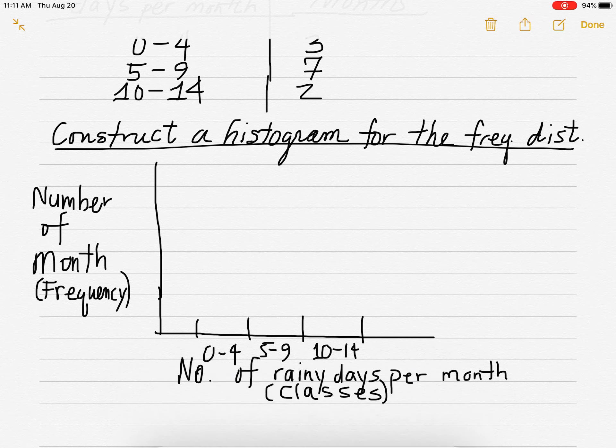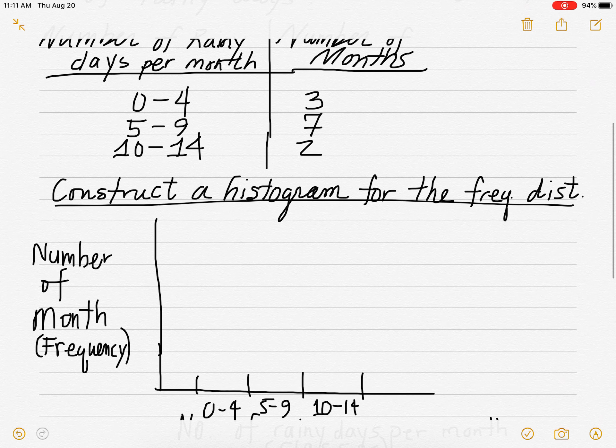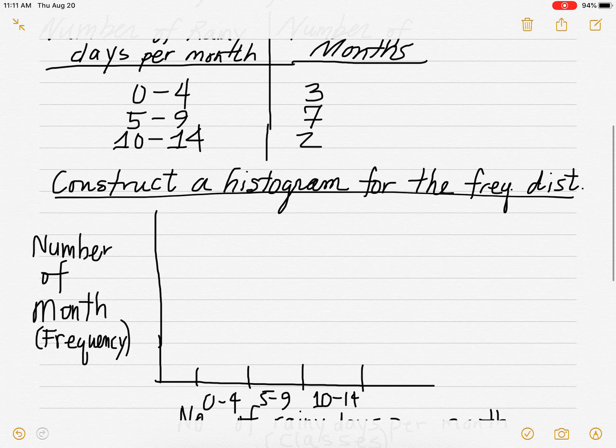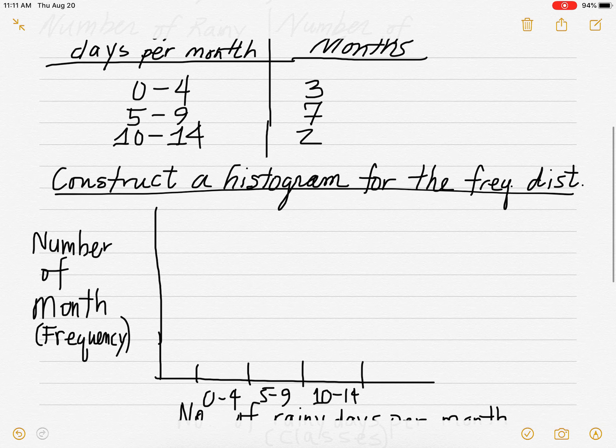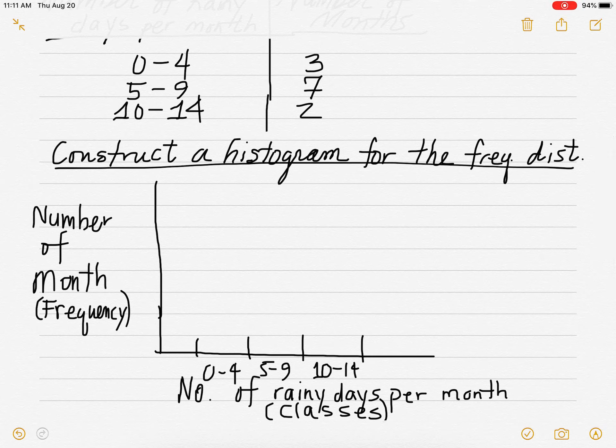Now this method is often used when you have discrete data. So here, the number of rainy days per month, that's discrete data, right? It's whole numbers. Zero days, one day, two days, three days, four days. So this method is often used where you just use the class limits along the bottom of your histogram.